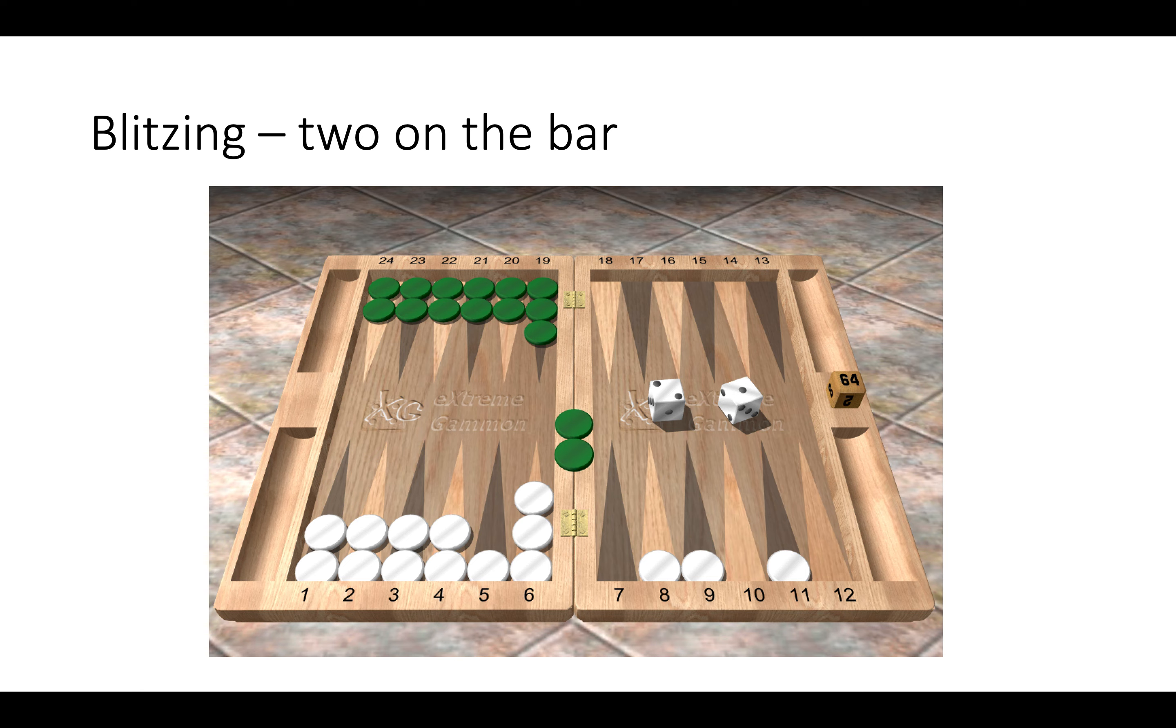Now in this position when green has two on the bar, you often see white bringing more checkers down to try to cover the blot. So here white is on roll, but we can see because he's diversified his checkers, he has many, many covering numbers. So ones, threes, fours, and sixes all cover. So pretty much anything white were to roll he would be able to cover the blot. So this is just a strategic point on blitzing. So if green has two on the bar, bring your checkers down to make sure you complete a full closeout.